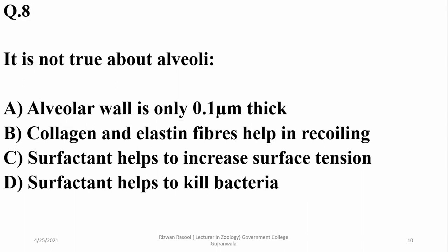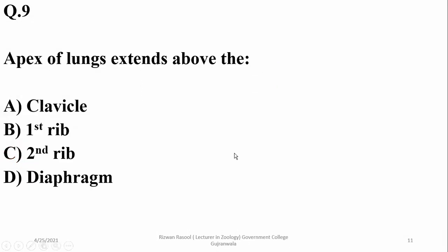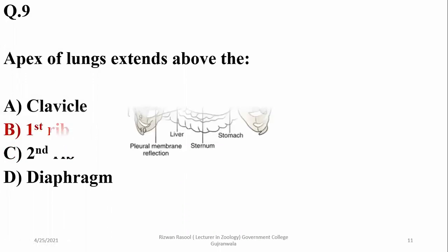Question eight: it is not true about alveoli — alveoli are approximately 0.1 micrometers and have collagen and elastin fibers. Surfactant is used to decrease surface tension, so Charlie is the wrong statement. The correct statement is delta: surfactant helps to kill bacteria with the help of macrophages.